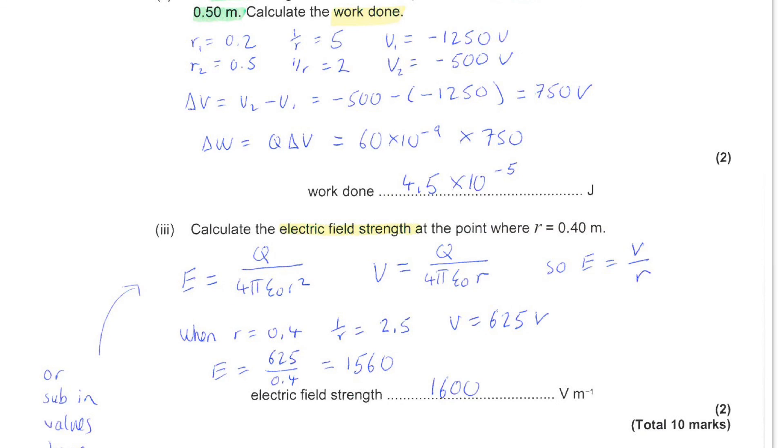So, we can just take the value of 625 and divide by 0.4, leading to 1,560 volts per meter.